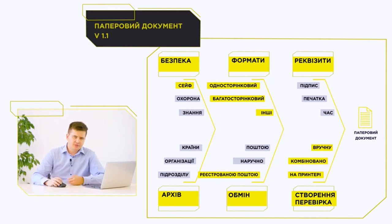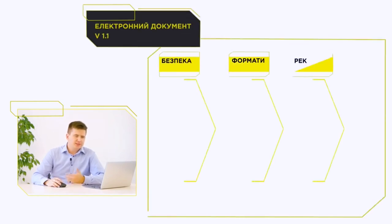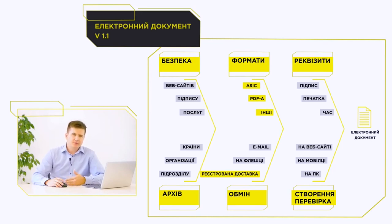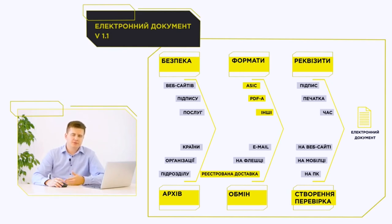When we move to an electronic document, we change document formats, because in the paper world it is paper A4, and in the electronic world it is PDF. But it is important to understand that the archival service must ensure long-term, or even lifelong, storage and preservation of electronic documents. So it is not a regular PDF — it is an archival PDF that any word processor can generate, whether it is Microsoft Word, LibreOffice, Adobe products, or others. It is a PDF standardized by the International Organization for Standardization (ISO) and is suitable for lifelong storage because it limits some of the features that a standard PDF has.